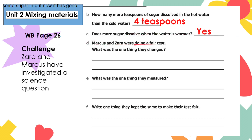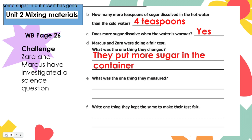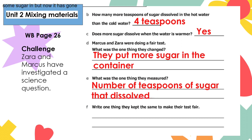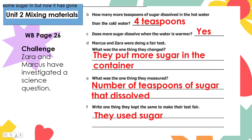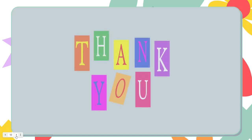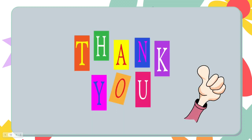Letter D: Marcus and Zara were doing a fair test. What was the one thing they changed? They changed the temperature of the water. Letter E: what was the one thing they measured? They measured the number of teaspoons of sugar that dissolved. Letter F: write one thing they kept the same to make their test fair — they only used sugar. I hope all the questions were easy, and if you can answer them, you are ready to move on to the next unit. Thank you very much, future scientists, for a job well done!